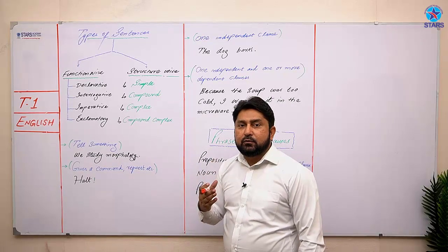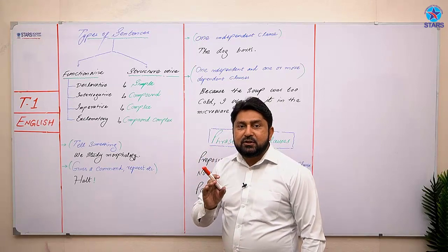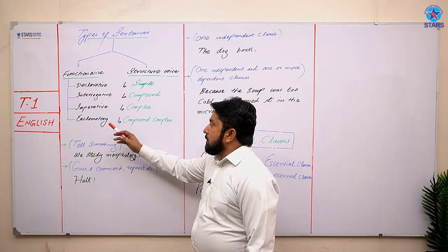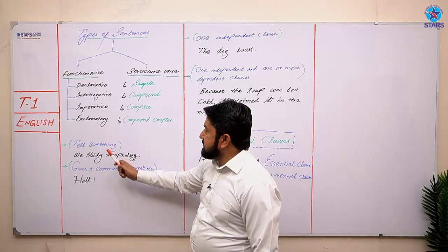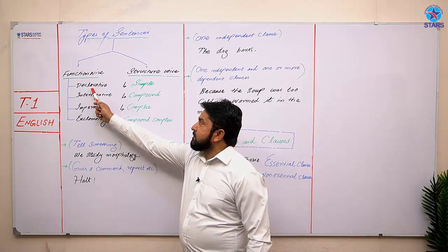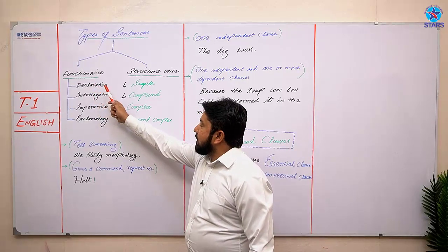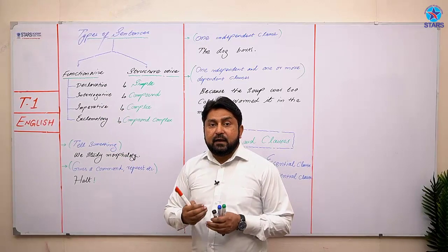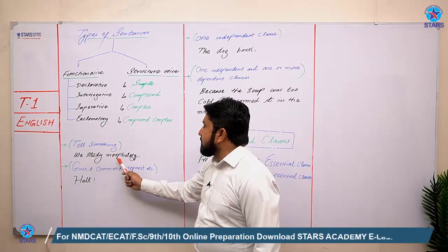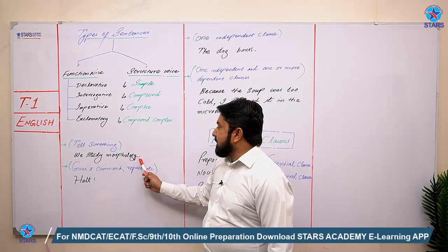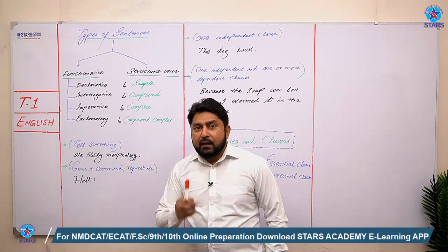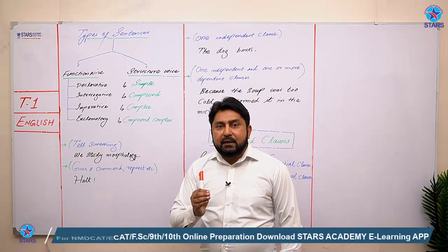We have to probe deep into each and every type so that we can master all these things. Due to little shortage of time, let's move towards declarative sentences. Declarative sentences talk about something — they give us information about happenings. Just like: 'We study morphology.' In the end of the expression, we have a dot, because this is the identification of a declarative sentence — it always ends with a period or a dot.